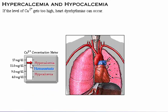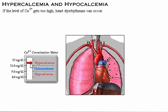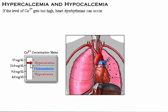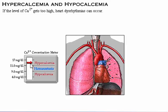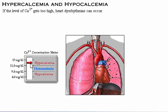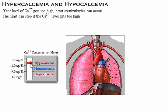If the level of calcium gets too high, heart dysrhythmias can occur. Other symptoms of hypercalcemia include fatigue, confusion, nausea, coma, cardiac arrest, and calcification of the soft tissues. The heart can stop if the calcium level gets too high.